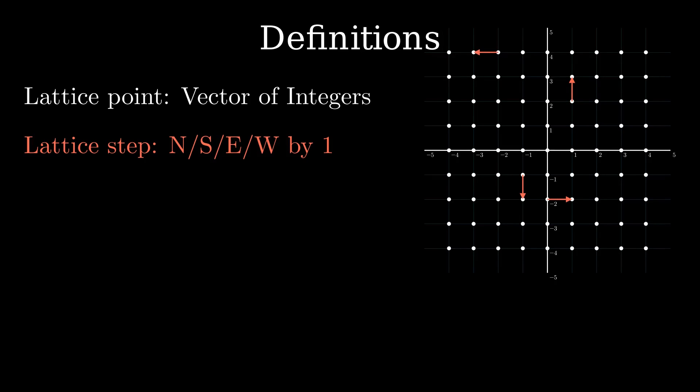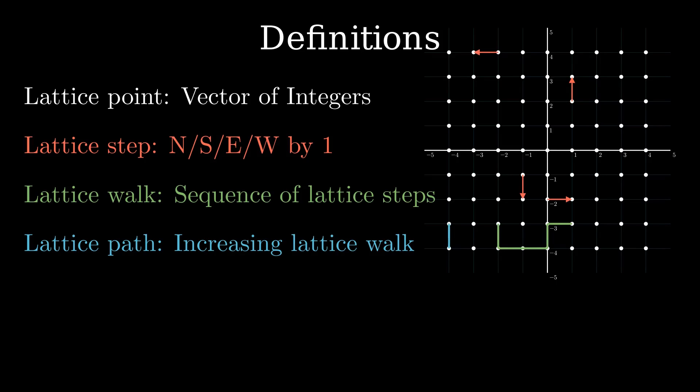A lattice walk is a sequence of lattice steps. And a lattice path is a lattice walk in which the coordinates only ever increase.